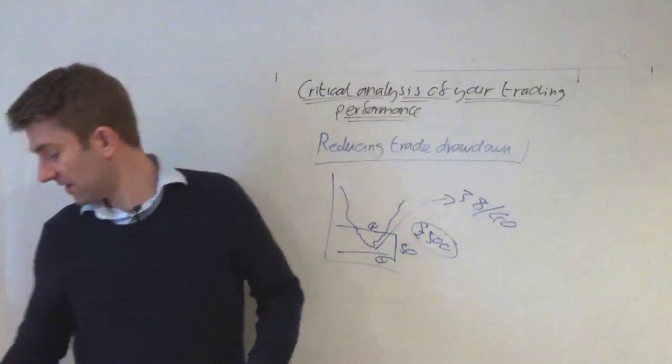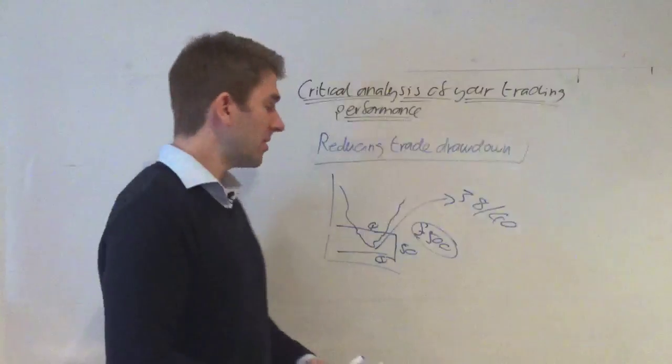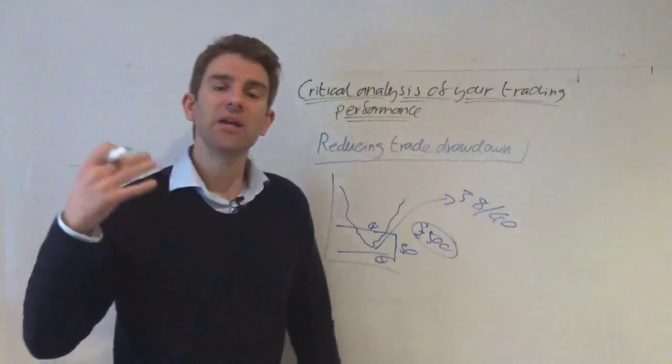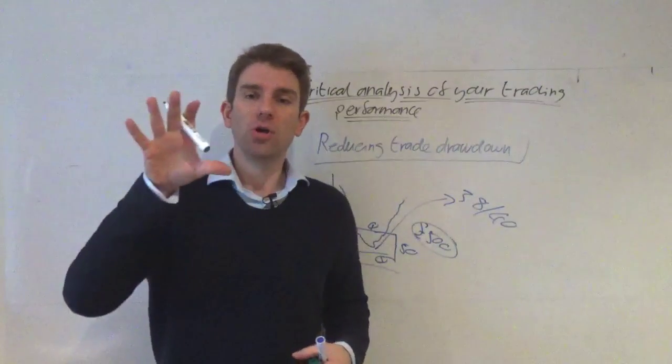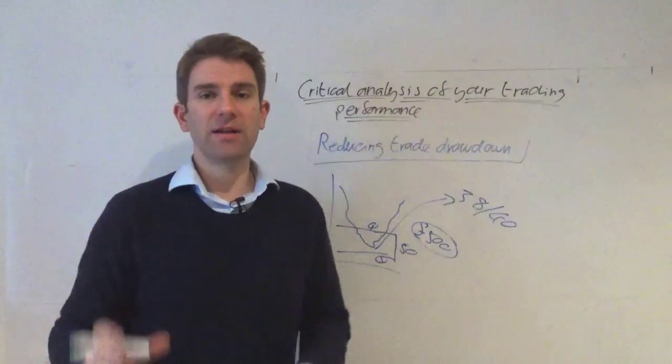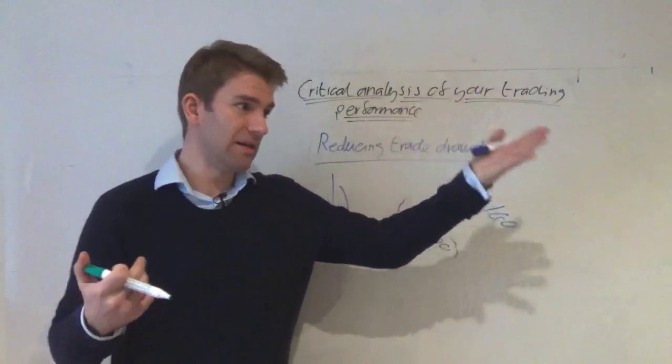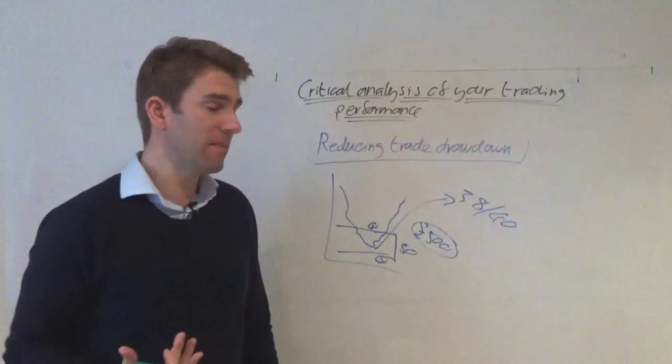Well, the reason is, if we can reduce the drawdown, we can increase our position size. Because we're all, at the end of the day, you and I are risking X amount per trade. This is generally how most people will approach it. I think it's the majority of us doing this, because we're comfortable with a specific amount of risk.